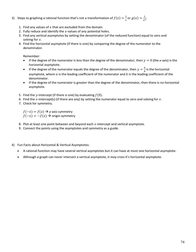A few fun facts about horizontal and vertical asymptotes: a rational function may have several vertical asymptotes, but at most one horizontal asymptote. Although a graph can never intersect a vertical asymptote, it may cross its horizontal asymptote. Horizontal asymptotes guide end behavior at the far right and far left, so in the middle the function might cross the horizontal asymptote.